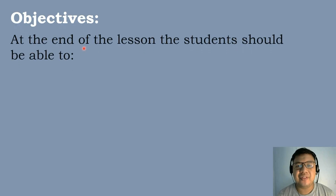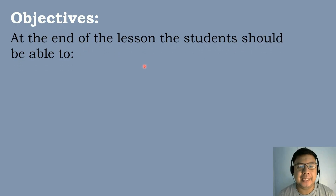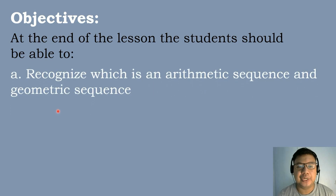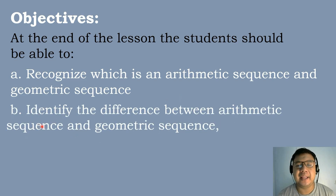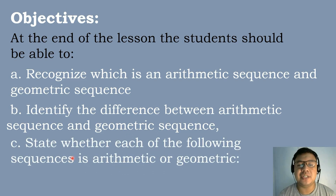Let's have the following objectives in today's topic. At the end of the lesson, the students should be able to: Letter A, recognize which is an arithmetic sequence and which is a geometric sequence; Letter B, identify the difference between arithmetic sequence and geometric sequence; and Letter C, state whether each of the following sequences is arithmetic or a geometric sequence.